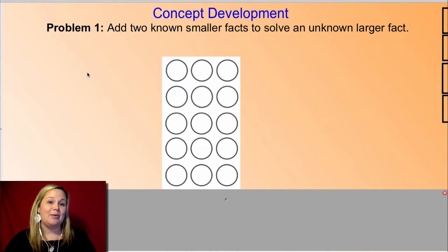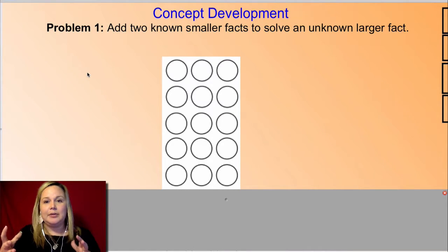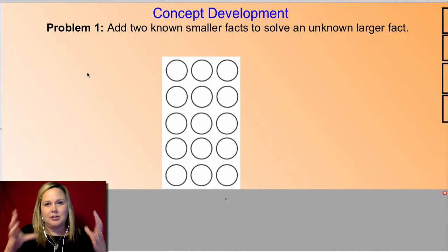So for our first problem we're going to add two known smaller facts to solve for a greater unknown larger fact. Basically all that means is we're going to use two smaller multiplication problems to solve a bigger multiplication problem. The first thing that I need you to do is I want you to have your template in your board in your dry erase pocket. Then I want you to cover up part of the array with a blank paper to show five rows of three.